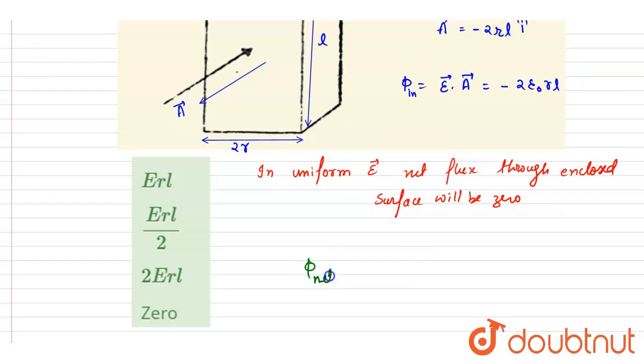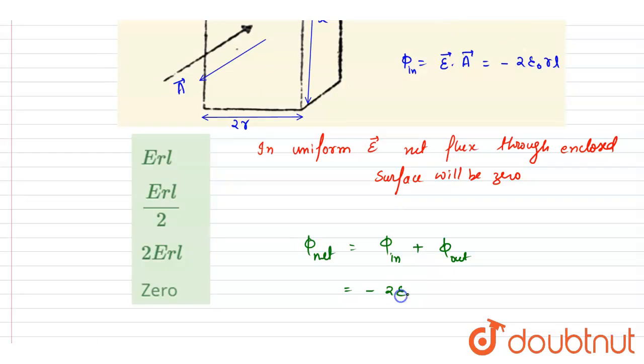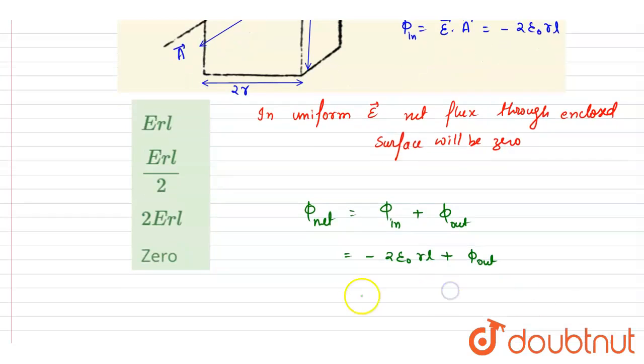So I will write down the F_net is equal to flux_in plus flux_out, so it will be minus 2E₀rl. So from here you will get the net out flux, that is from the curve part it is 2E₀rl.